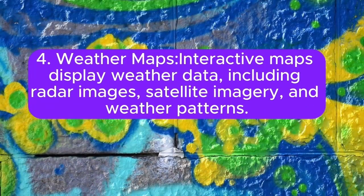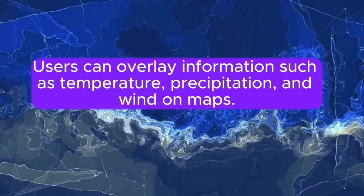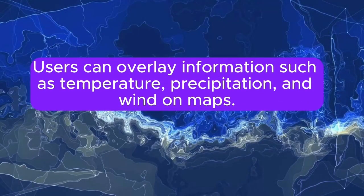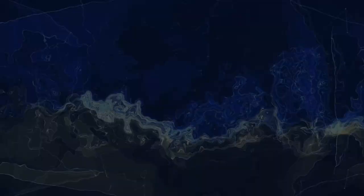4. Weather maps: interactive maps display weather data, including radar images, satellite imagery, and weather patterns. Users can overlay information such as temperature, precipitation, and wind on maps.